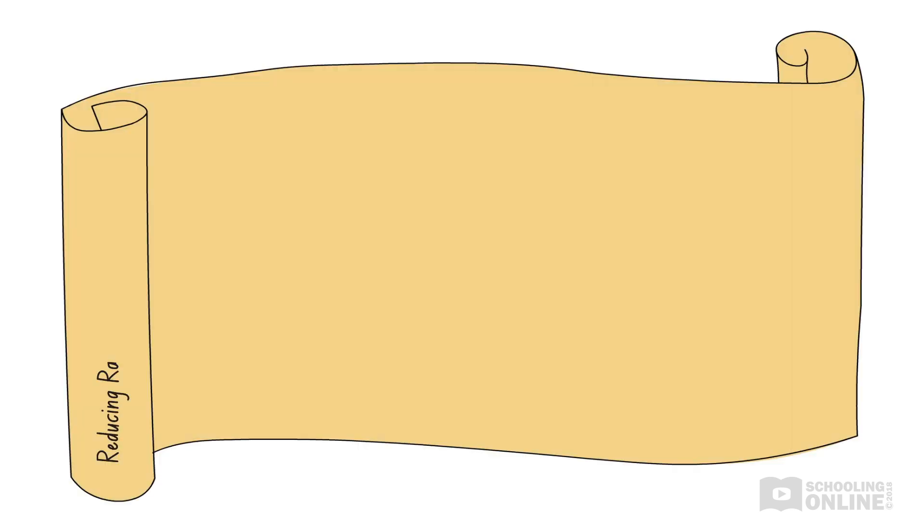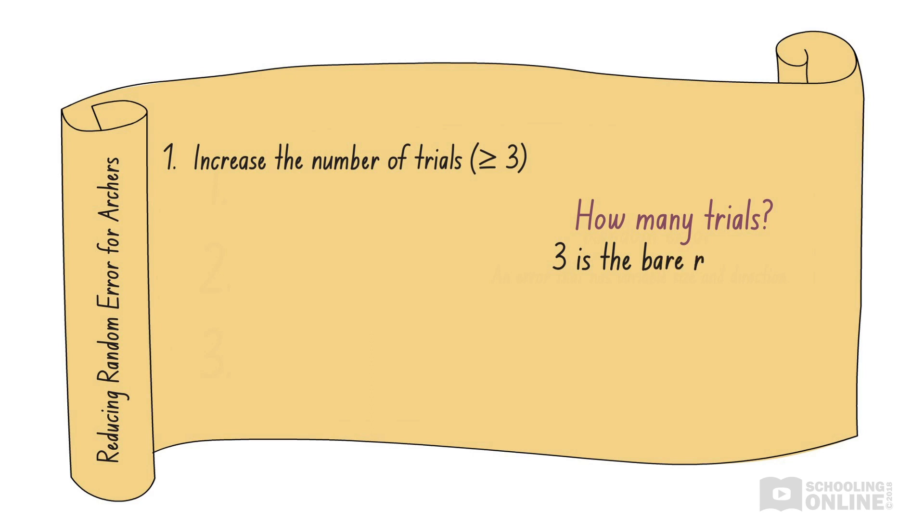Now, how do we reduce the effects of random error on our experimental results? Assuming that we do our best to perform an experiment exactly the same each time, there are three main ways that we can do this. Firstly, we can increase the number of trials that we perform. Instead of taking just one measurement, we should collect as much data as possible. So, how many trials is enough? This depends on the experiment that you are doing.